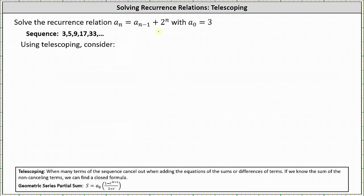The telescoping method is helpful when many of the terms of the sequence cancel out when adding the equations of these sums or differences of terms. If we know the sum of the non-canceled terms, we can find a closed formula. Let's start forming equations using the difference of terms.